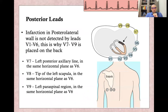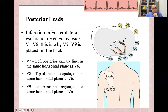There are also posterior leads, performed when posterior wall infarction is suspected, because the standard leads up to V6 cannot visualize the posterior wall of the left ventricle. We add V7, V8, and V9. These leads are usually recorded with the patient lying on their right side. V7 is placed at the same level as V6 — fifth intercostal space — but at the posterior axillary line. V8 is placed at the tip or below the tip of the left scapula, and V9 is in the left paraspinal region at the level of V6 or the fifth intercostal space.